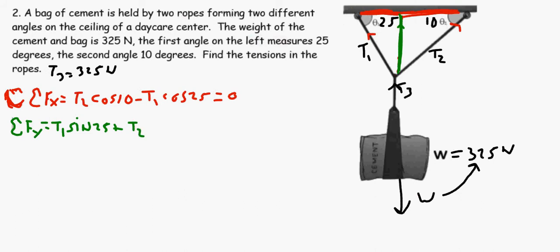They're both pulling up, so I can start with T1 sine 25 plus T2 sine of 10 minus the weight that's pulling down, which we know is 325 Newtons. It's not accelerating or doing anything, moving at a constant speed, so that equals zero.